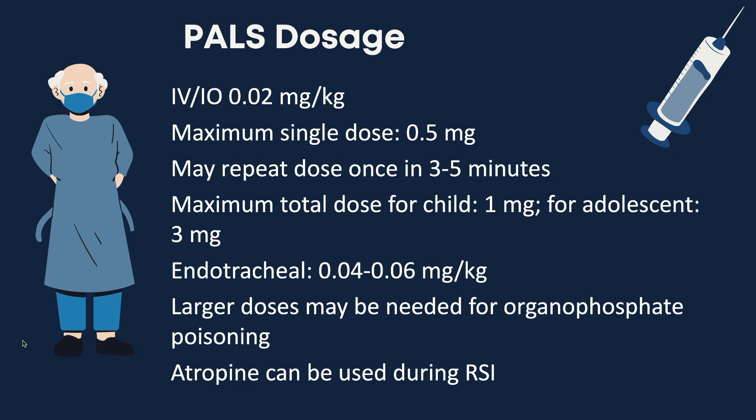As mentioned earlier, larger doses may be needed for organophosphate poisoning. If the child is below 12 years, a dose of 0.05 milligrams per kilogram IV or IO can be used initially, then repeat and double the dose every 5 minutes until the symptoms reverse. If the patient is above 12 years, start with 1 milligram IV, then repeat and double the dose every 5 minutes until the symptoms reverse.